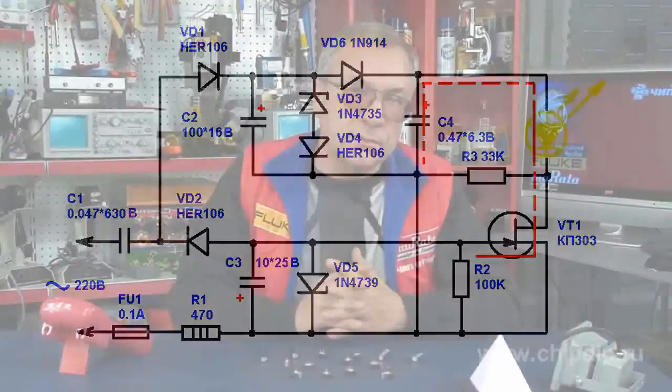Capacitor C1 absorbs excess supply voltage. Resistor R1 reduces voltage surges when the LED light is switched on.